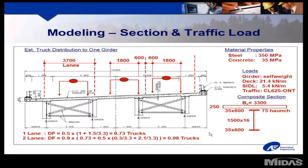Other items to establish are the other loads, such as dead loads, and we assign materials to the different parts of the composite section, and we define our composite section with the steel girder and the concrete with the effective width that we have already discussed.